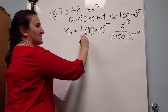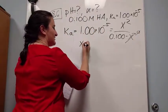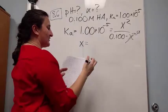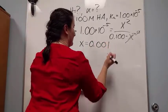So in this situation, now we can do our math and solve for x, and for x we get 0.001.